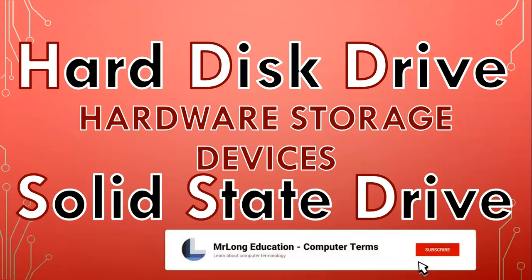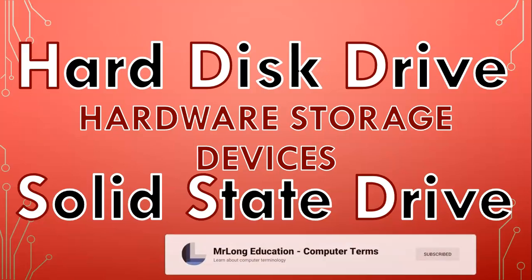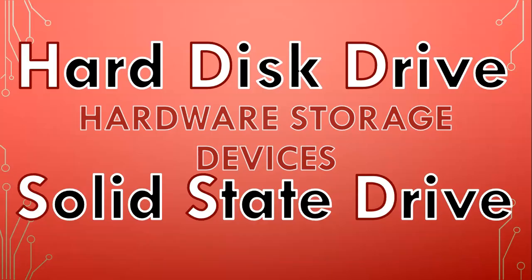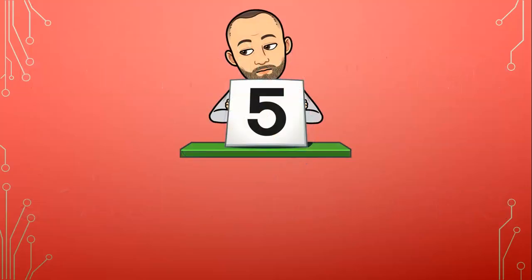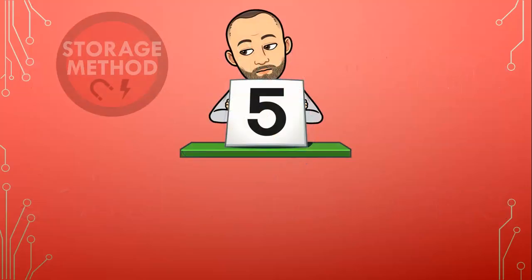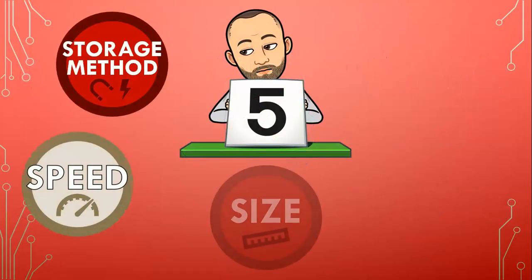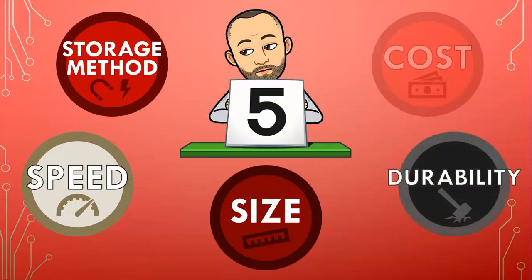Hard drives have been around for ages, while solid state drives are a newer technology. How they store data and what they are made of are the key differences. There are five differences between a hard drive and a solid state drive: storage method, speed, size, durability, and cost.